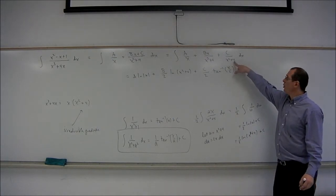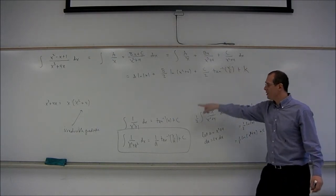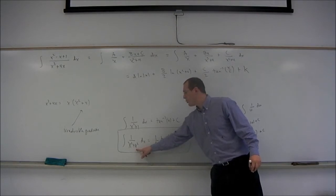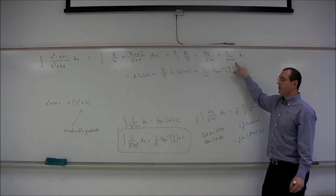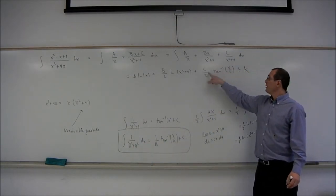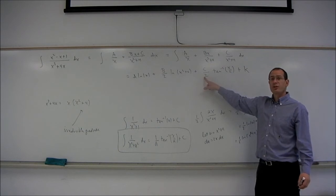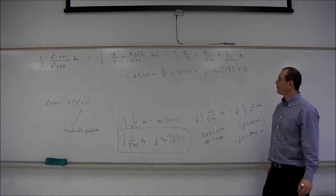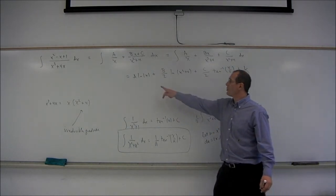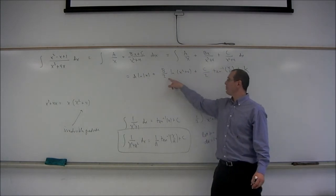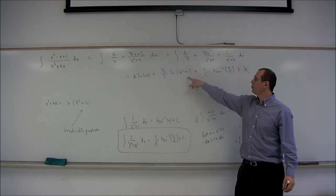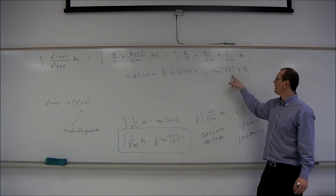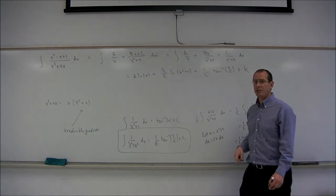For x squared plus 4, the a squared equals 4, so a equals 2. This last term integrates to C over 2 times the inverse tangent of x over 2, plus a constant of integration. So the answer is going to look like A log x plus B over 2 log of x squared plus 4, plus C over 2 inverse tan of x over 2, plus a constant.